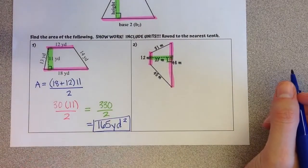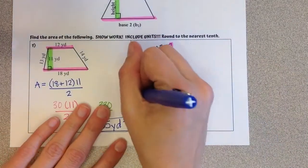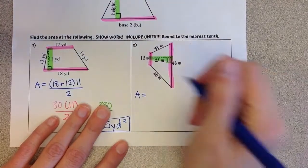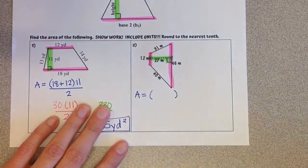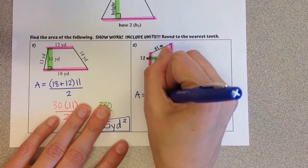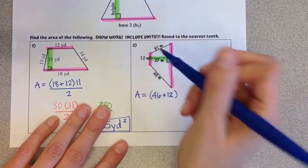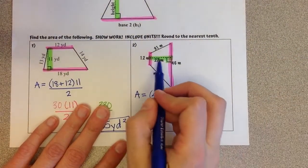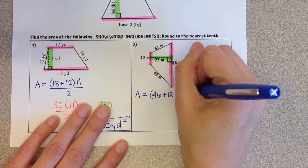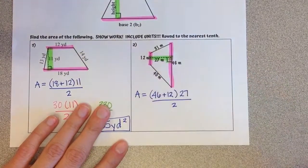Now we can plug it into our formula. So the area equals base 1 plus base 2. So 46 is our base 1 plus 12 is our base 2, times that perpendicular height of 27, divided by 2.